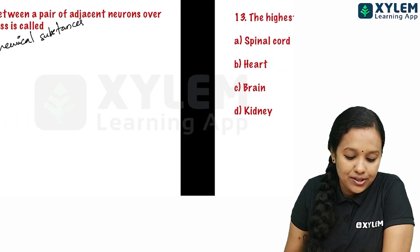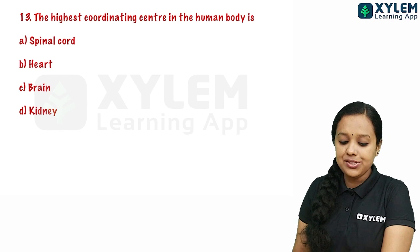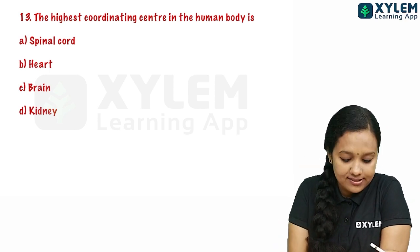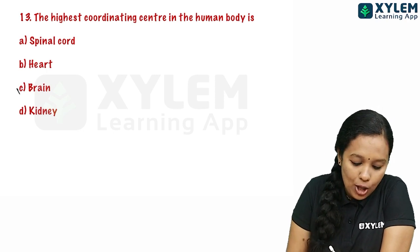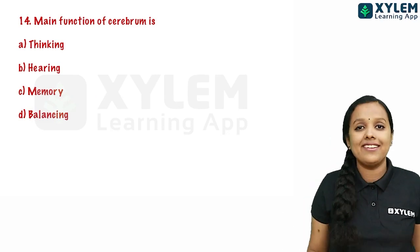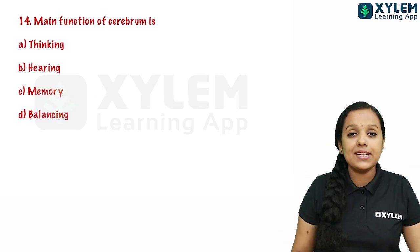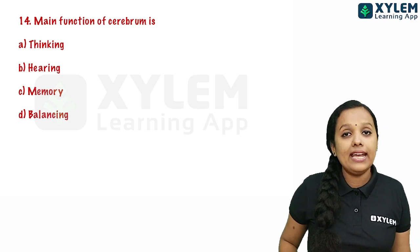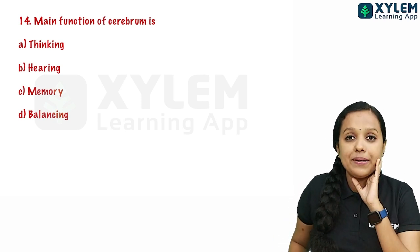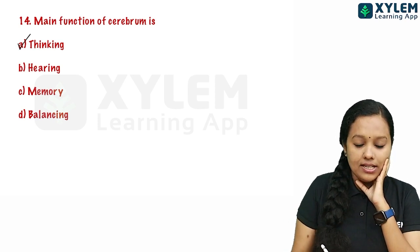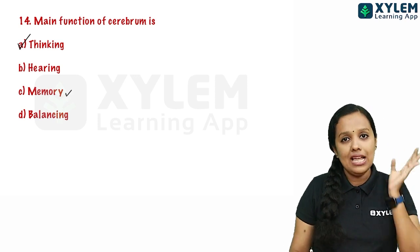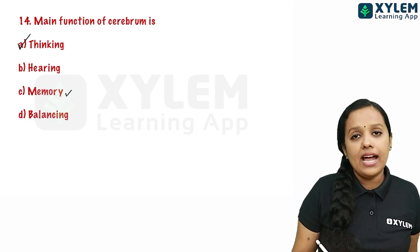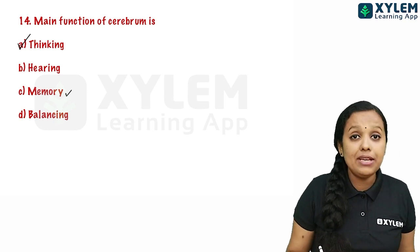The thirteenth question: the highest coordinating center of the body — the options are spinal cord, heart, kidney, and brain. The brain is the highest coordinating center. The fourteenth question: the main function of the brain includes thinking, hearing, memory, and balancing.